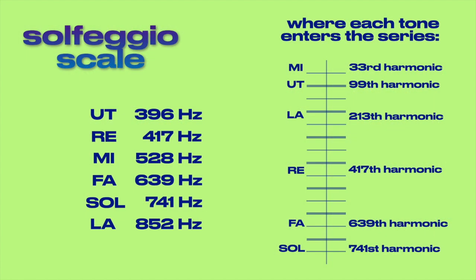528 Hz is a tone found in the solfeggio scale. The ancient solfeggio predates our familiar diatonic scale and comprises a series of six notes that were used in some Gregorian chants.